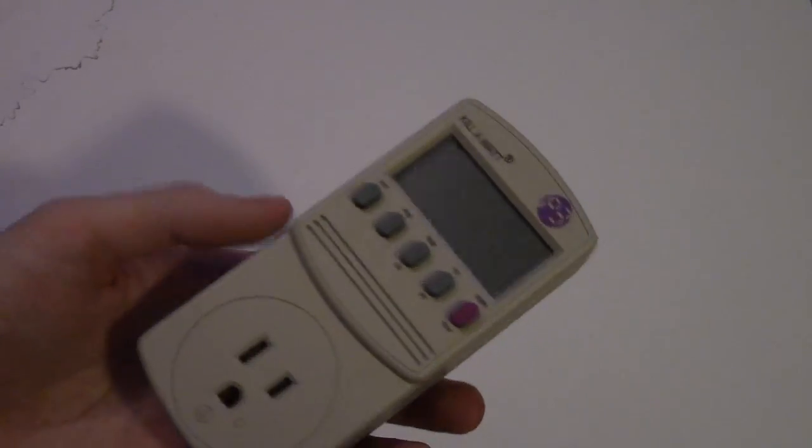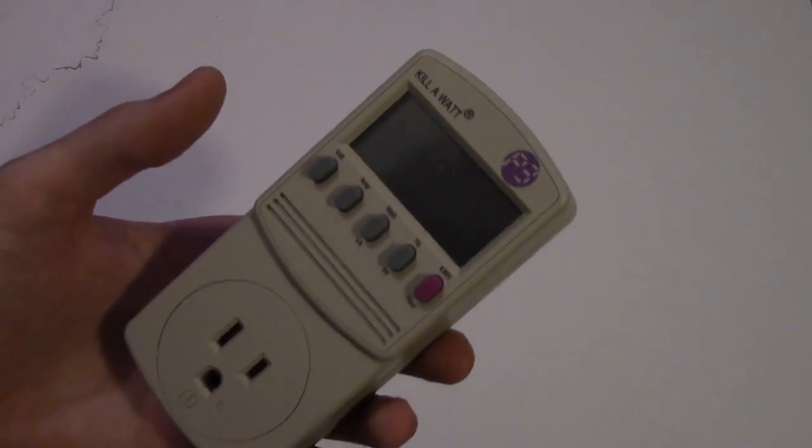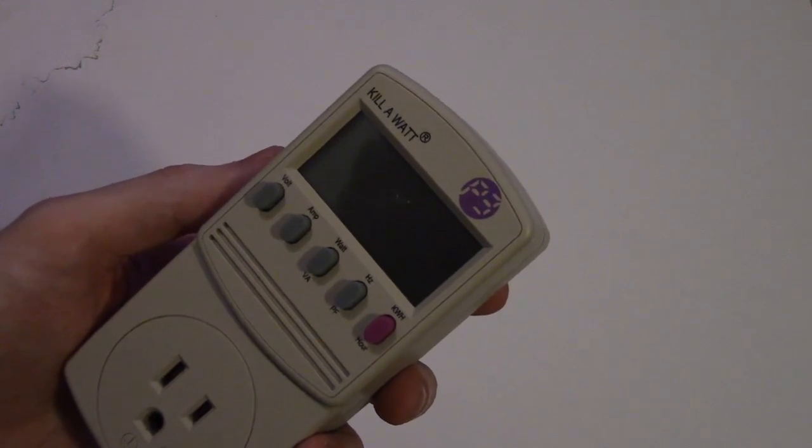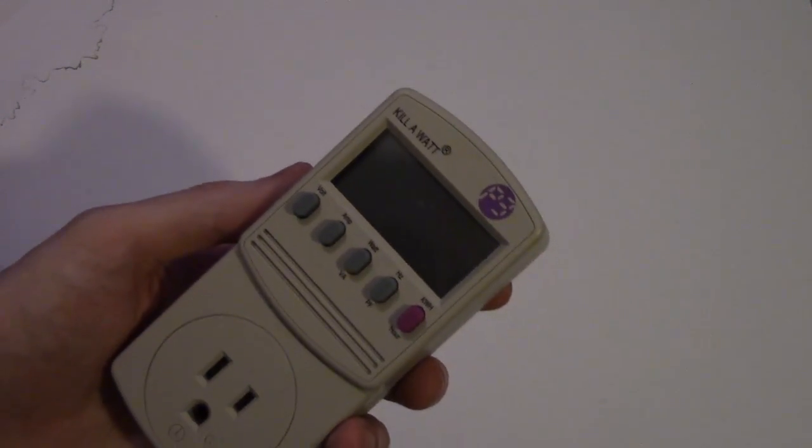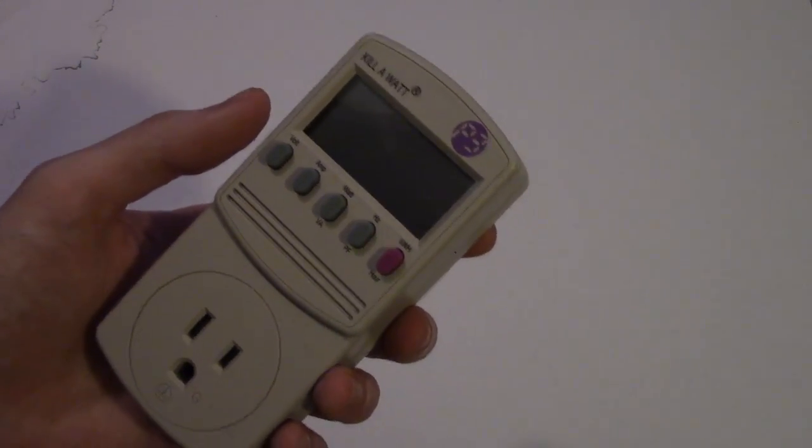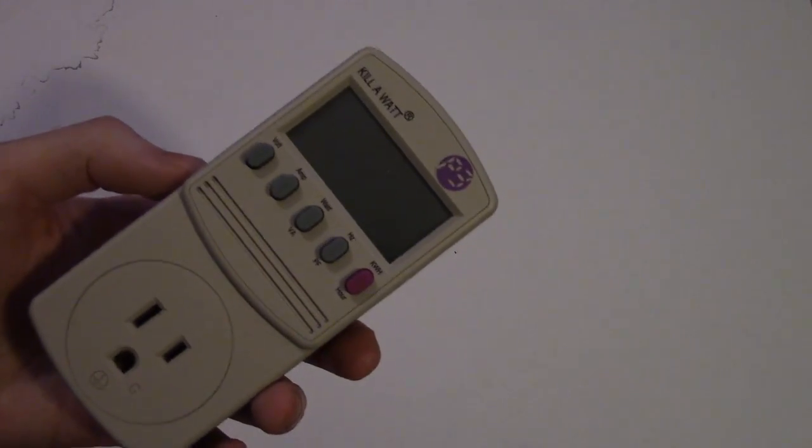Say someone plugs one of these into the outlet with an air conditioner and they're running it, they can see the kilowatt hour measurement on the display of the Kill-A-Watt. Then with some calculations with how much it costs per kilowatt hour, they can gauge how much it would cost them on their electric bill.